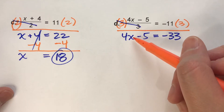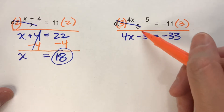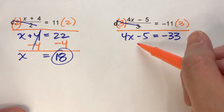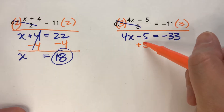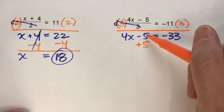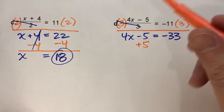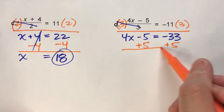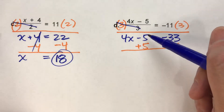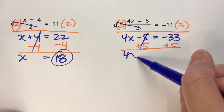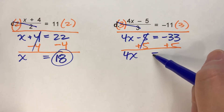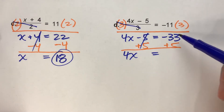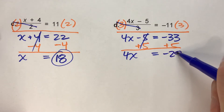We have x, they multiplied it by 4, and then they subtracted 5. Subtracting 5 was the last thing they did, so that's the next thing to undo. We undo subtracting 5 by adding 5. And negative 33 plus a positive 5 — be careful here — this is negative 28.